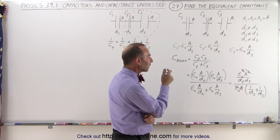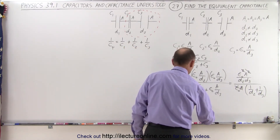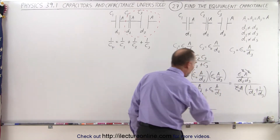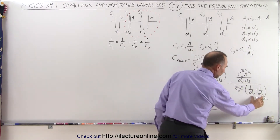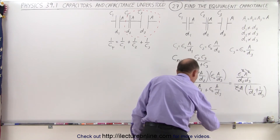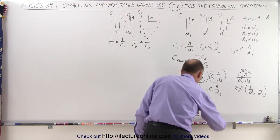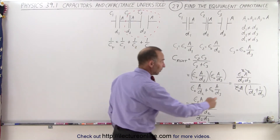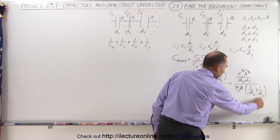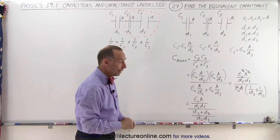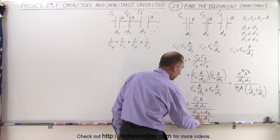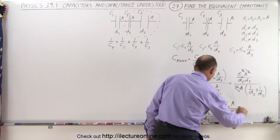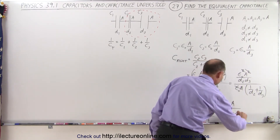In the denominator, I find the common denominator, which is D2 times D3. So I end up with D3 plus D2 divided by D2 times D3. We simply add these up by using the common denominator of the product of these two, so I end up with D3 plus D2 in the numerator. Now you can see that the D2 D3 here and the D2 D3 here cancel, and so I'm left with epsilon sub-naught times A divided by D2 plus D3.